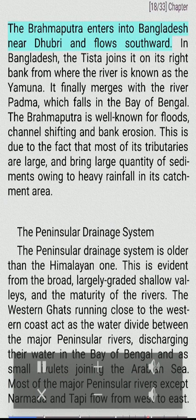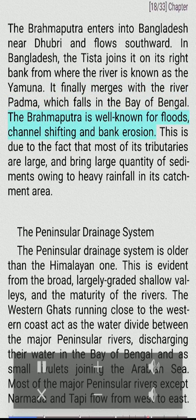The Brahmaputra enters Bangladesh near Dhubri and flows southward. In Bangladesh, the Tista joins it on its right bank, from where the river is known as the Jamuna. It finally merges with the river Padma, which falls into the Bay of Bengal. The Brahmaputra is well known for floods, channel shifting, and bank erosion, due to the fact that most of its tributaries are large and bring large quantities of sediments owing to heavy rainfall in its catchment area.